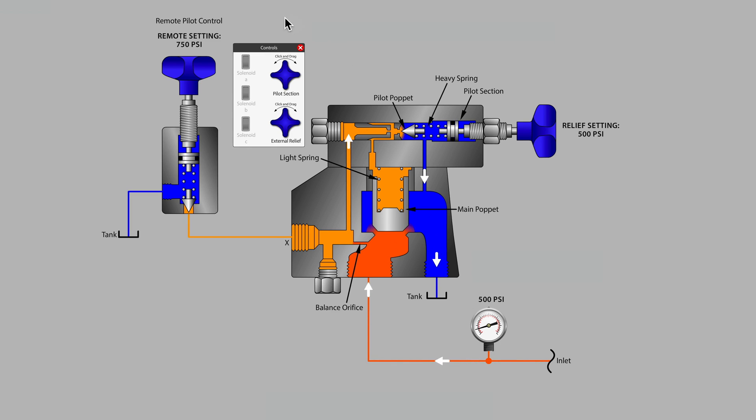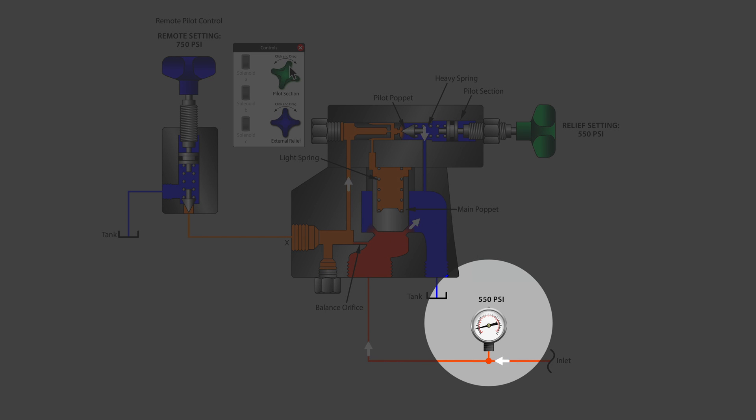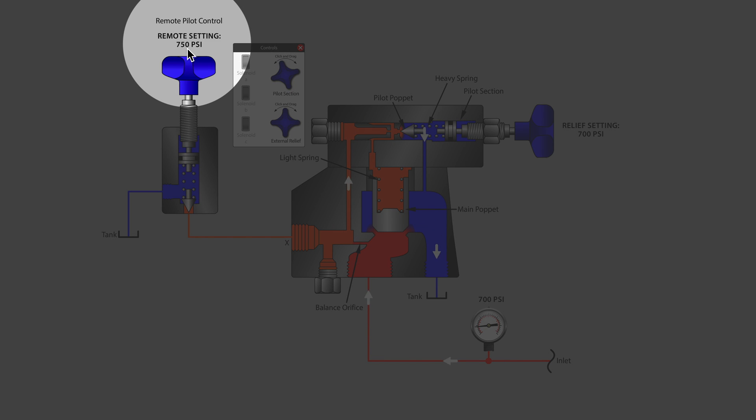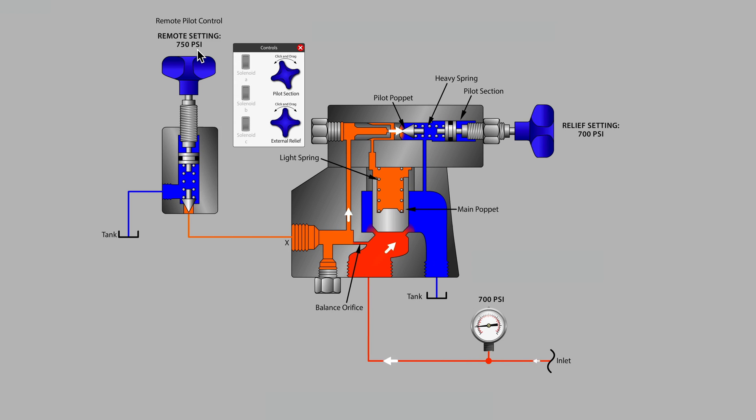Notice that the remote pilot section is set at 750. Well, let's start increasing the spring tension on the pilot section on the main relief and watch the pressure gauge. The pressure is going up, we are controlling the maximum system pressure. We're now at 700, but watch what happens as the system pressure passes over 750 psi.